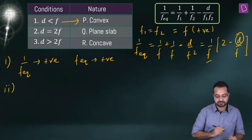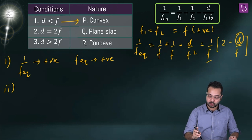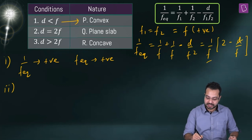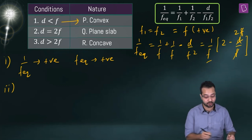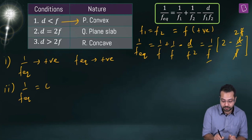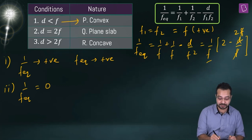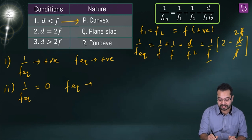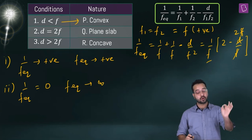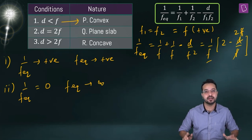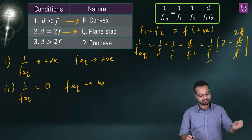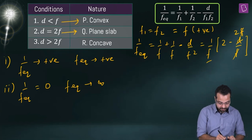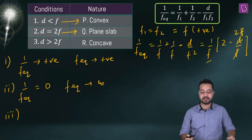Second situation: d is equal to 2f. When d = 2f, the f cancels and we have 2 - 2 = 0, so 1/f_eq becomes 0. This means f_eq tends to infinity, which means the combination behaves as a plain glass slab.